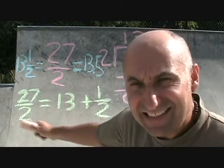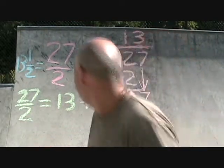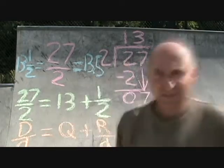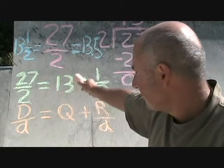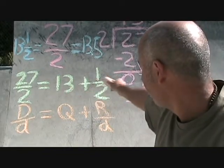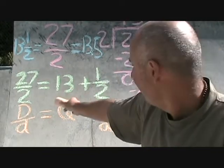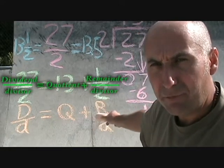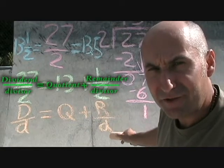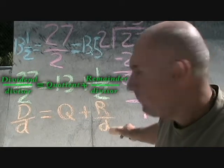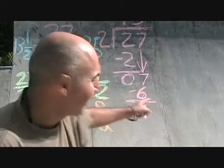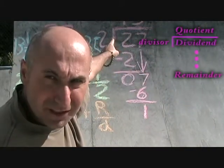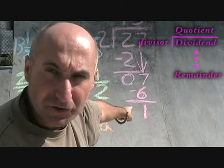So you can write down this expression in the following form. So you can write this expression, 27 divided by 2 is equal to 13 and a half, as your dividend divided by your divisor is equal to your quotient plus your remainder divided by your divisor. Which is exactly what we had over here with the pink. 27 is your dividend, 2 is your divisor, 13 is your quotient, and 1 is your remainder.